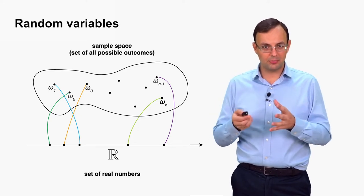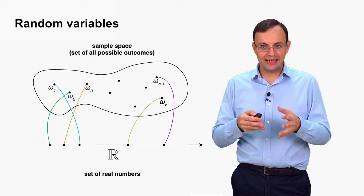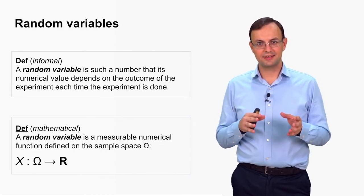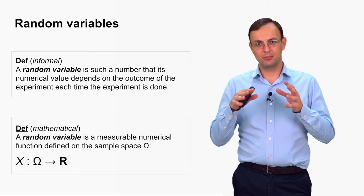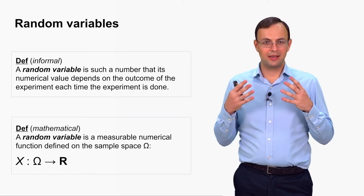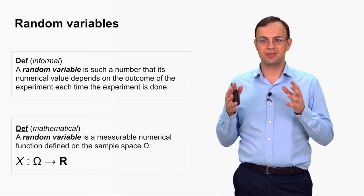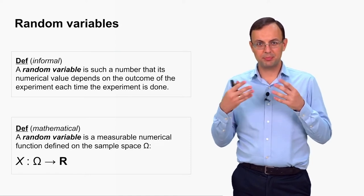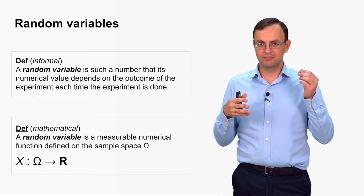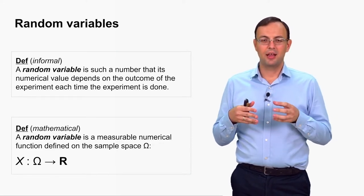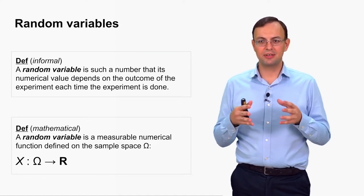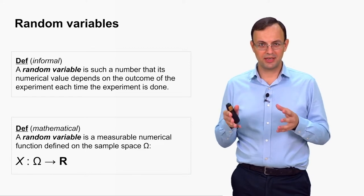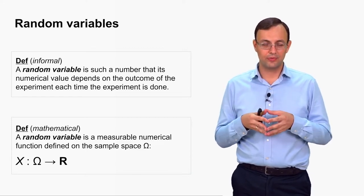That is why mathematically, a random variable is a function defined on the capital Ω — the sample space — with its values in ℝ, the set of real numbers. So that is how we define what a random variable is, both informally and in the more strict mathematical way. The short informal definition is: a random variable is a number whose numerical value depends on the outcome of the experiment — so each time the experiment is repeated, this variable takes some value that depends on the outcome. The mathematical definition is: a random variable is a measurable numerical function defined on the sample space Ω with its values in ℝ.